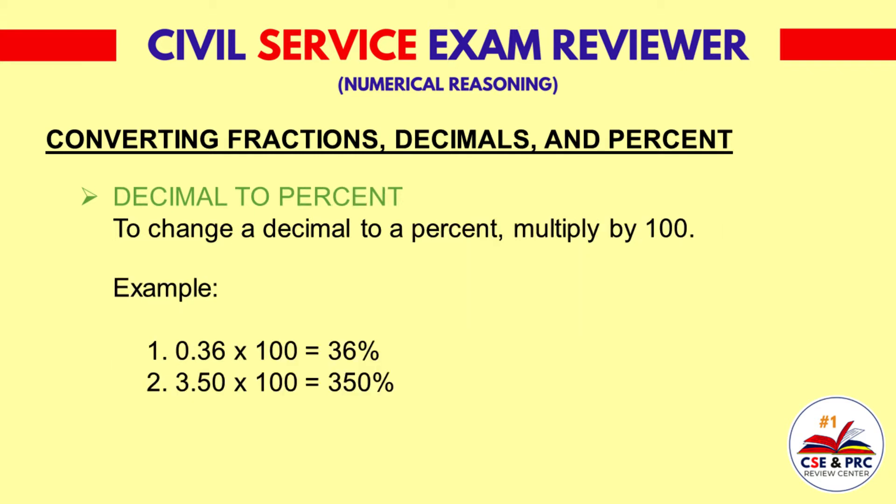Decimal to percent. To change a decimal to a percent, multiply by 100. Example 1: 0.36 times 100 is equal to 36%. Example 2: 3.50 times 100 is equal to 350%.